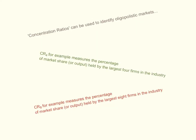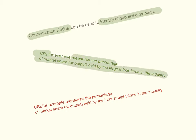Economists use concentration ratios to identify oligopolistic markets. A CR4 — concentration ratio 4 — measures the percentage of market share held by the largest four firms in the industry. A CR8 measures the percentage market share of output held by the largest eight firms in the industry. These concentration ratios are used to identify oligopolistic markets.